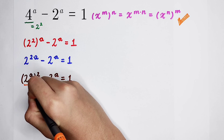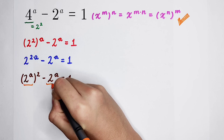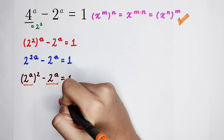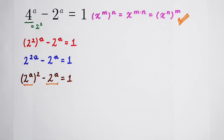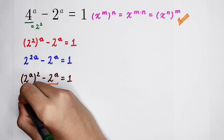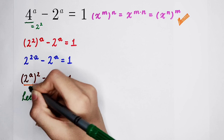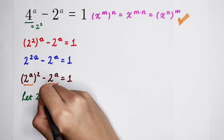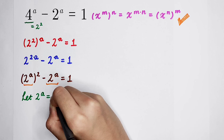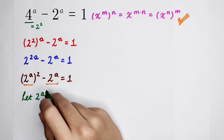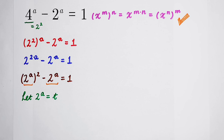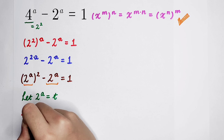Very good. Because here 2 to the power of a appears twice, we need to substitute. We can let 2 to the power of a equal t — or u or x if you prefer, it's up to you. This equation will then become an equation in t.